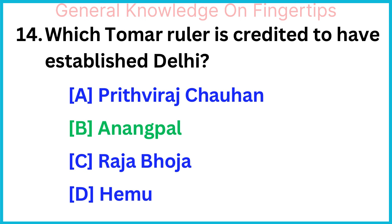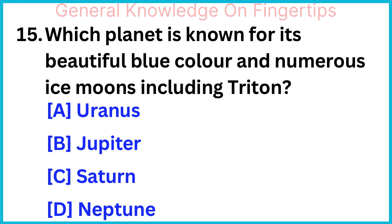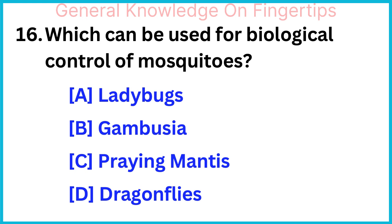Which planet is known for its beautiful blue colour and numerous ice moons including Triton? Neptune. Which can be used for biological control of mosquitoes? Gambusia.